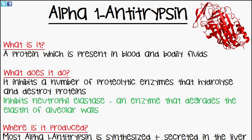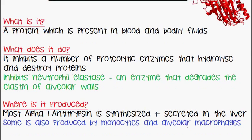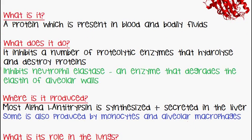So where is alpha-1 antitrypsin produced? Well, most of it is synthesized and secreted in the liver, and some is also produced by monocytes and alveolar macrophages.